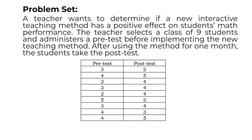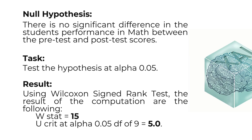The first student's pre-test result is 3 with a post-test score of 2. The remaining pairs of scores are: 4 and 5, 2 and 4, 3 and 4, 2 and 4, 5 and 3, 3 and 4, 4 and 3, and 4 and 5. Based on that hypothetical problem, we crafted our null hypothesis.